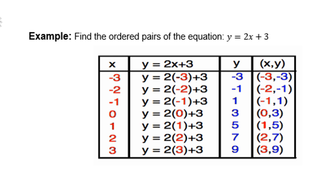Example: find the ordered pairs of the equation y equals 2x plus 3. If x is negative 3, we substitute negative 3 into x and get negative 3. So the ordered pair is negative 3, negative 3. If I use negative 2, we get negative 1, so the ordered pair is negative 2, negative 1. If I use negative 1, I get positive 1, so the ordered pair is negative 1, positive 1. If I use 0, I get 3, so the ordered pair is 0, 3. If I use positive 1, I get 5, so the ordered pair is 1, 5. If I use positive 2, I get 7, so 2, 7. If I use positive 3, I get 9, so 3, 9.